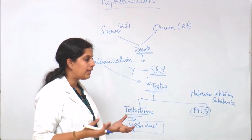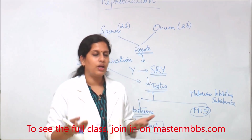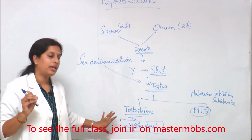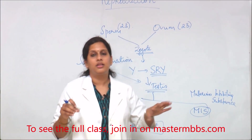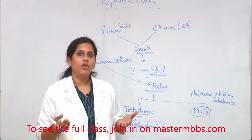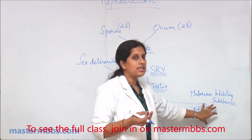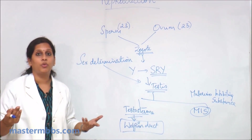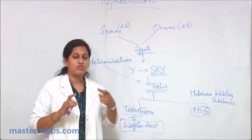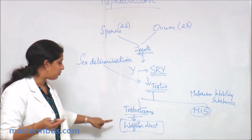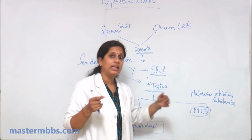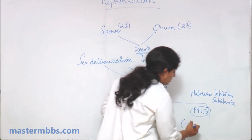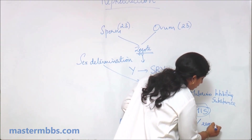The proliferation and development of the Wolffian duct leads to the development of male reproductive structures. The Mullerian duct, on the other hand, helps in the development of female reproductive structures, so its development must be inhibited. The testis produces two substances: testosterone, which promotes Wolffian duct development, and Mullerian inhibiting substance, which causes the regression of the Mullerian duct.